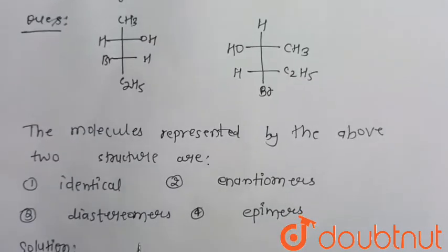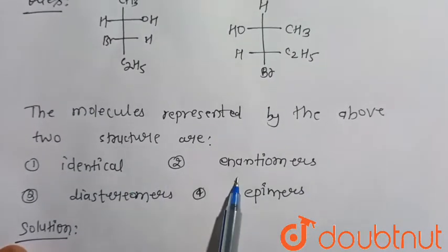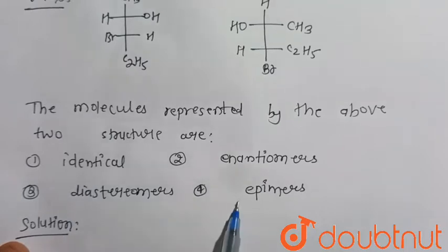So consider, these four options are given. First one is identical, second is enantiomers, third is diastomers and fourth is epimers.